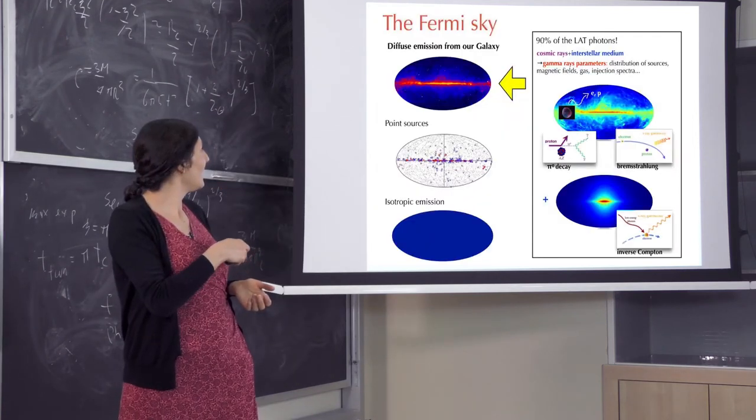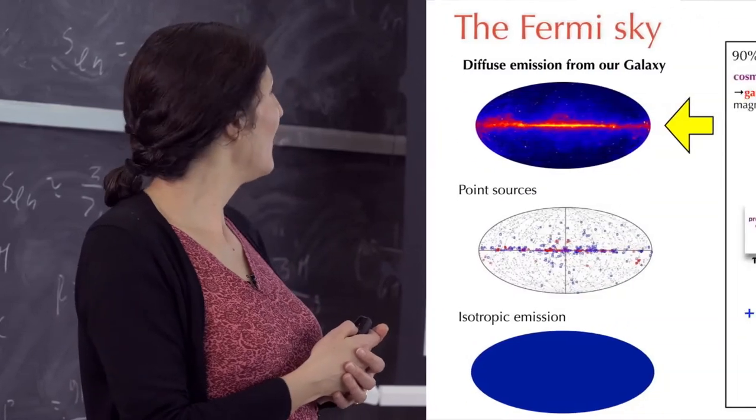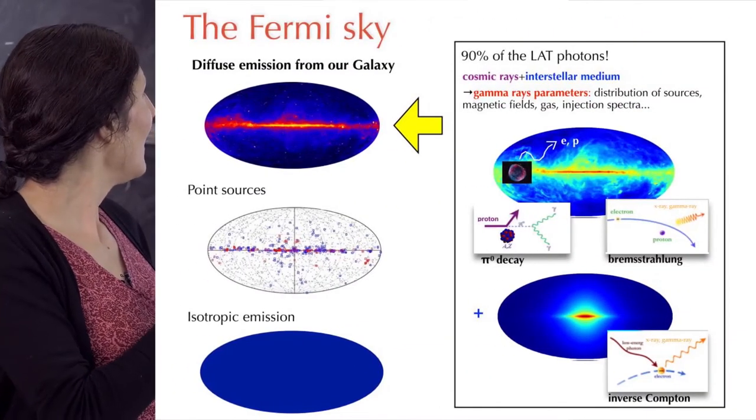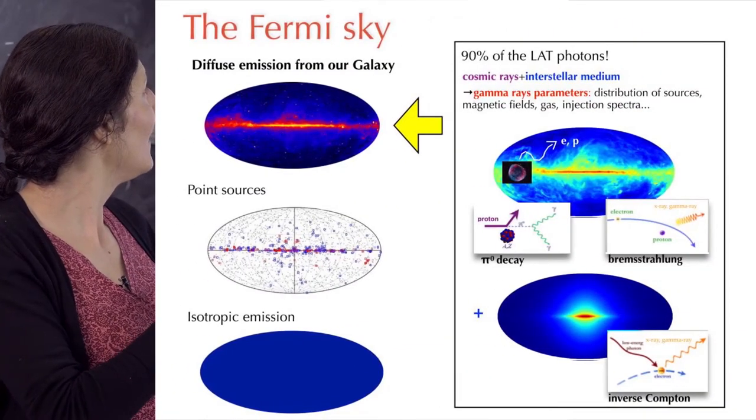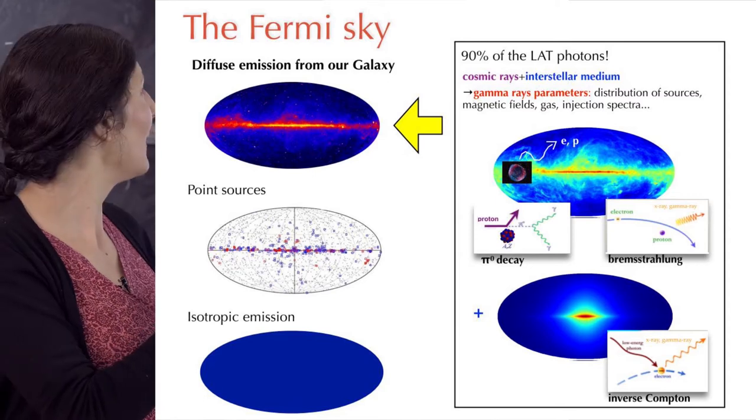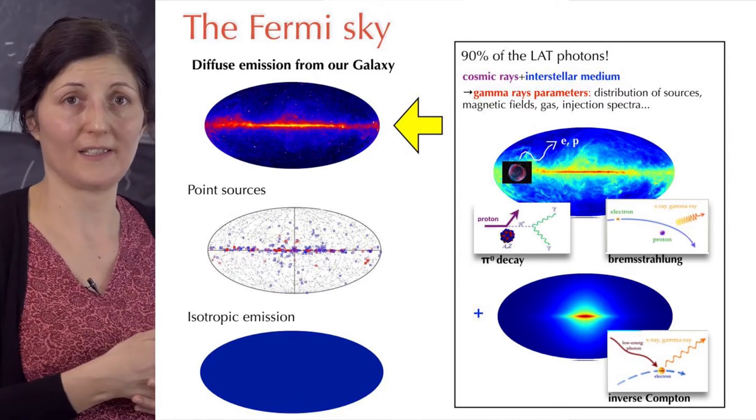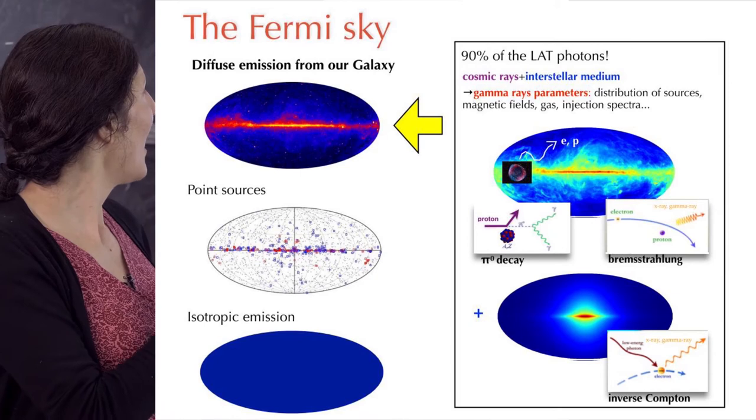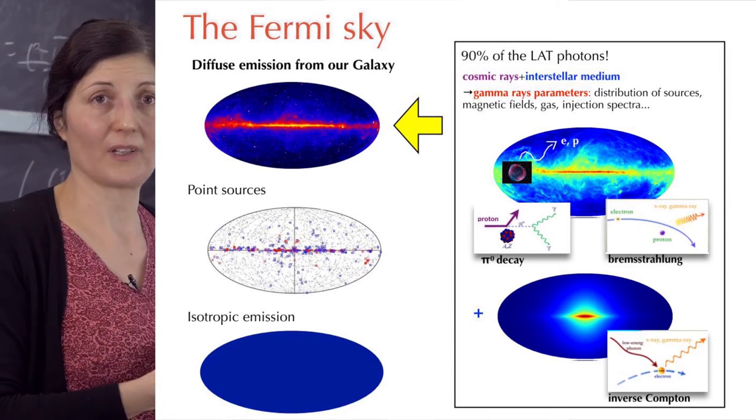Basically, this is the sky that Fermi measures. What you can see, first thing, is this very, very bright plane. This is actually the plane of the Milky Way, of our own galaxy. And you see that it shines very brightly in gamma rays.